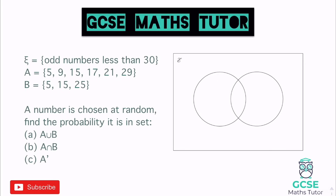Before we start, we need to look at this little symbol here — this just means the universal set, it means all the numbers that are going to go inside this Venn diagram somewhere. In this case it says all the odd numbers less than 30, so it might just give you the list of numbers. If it doesn't, it's best to write them all out: 1, 3, 5, 7, 9, 11, 13, 15, 17, 19, 21, and the rest.